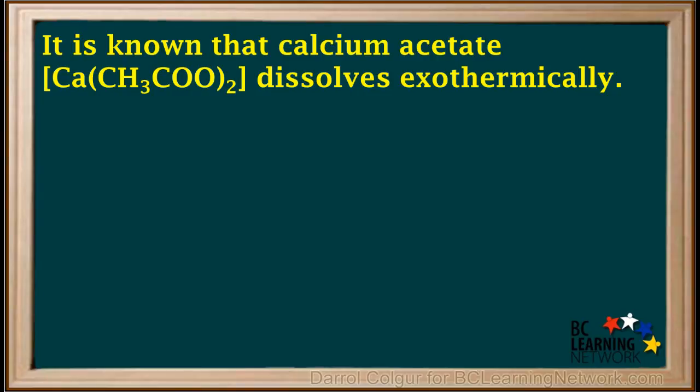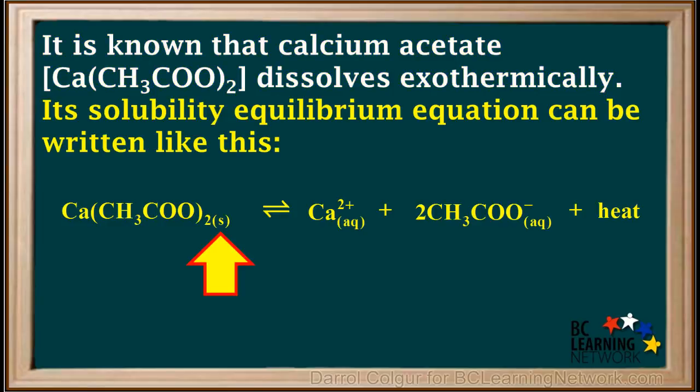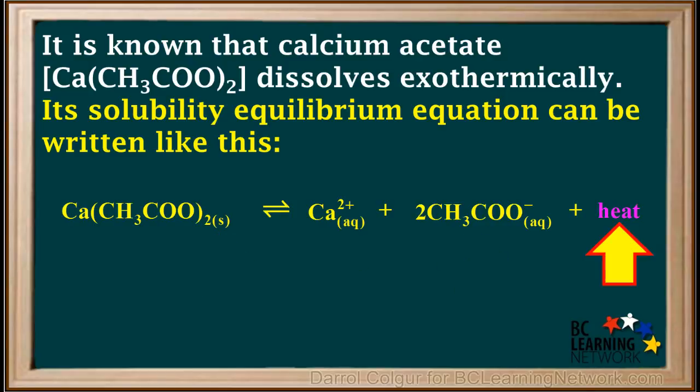Now let's consider a compound that dissolves exothermically. It is known that calcium acetate, Ca(CH₃COO)₂, dissolves exothermically. So its solubility equilibrium equation can be written like this, with the solid on the left, the dissolved ions on the right, and the heat term on the right.